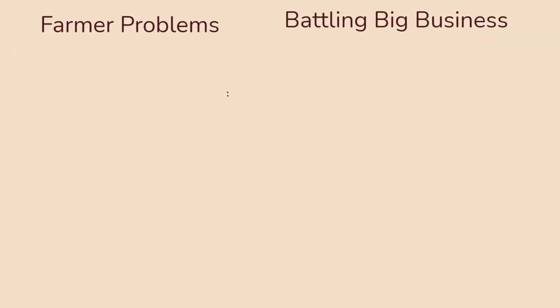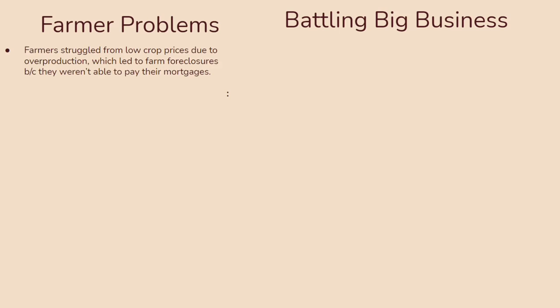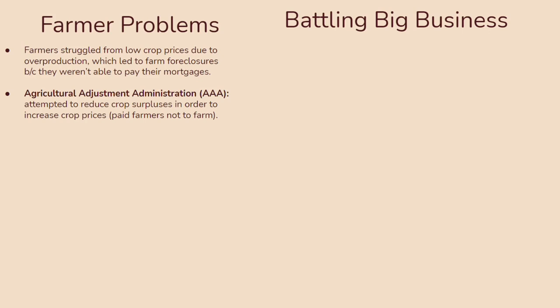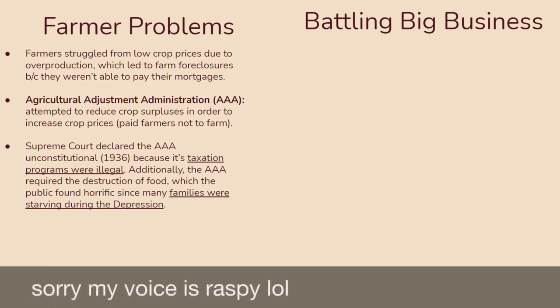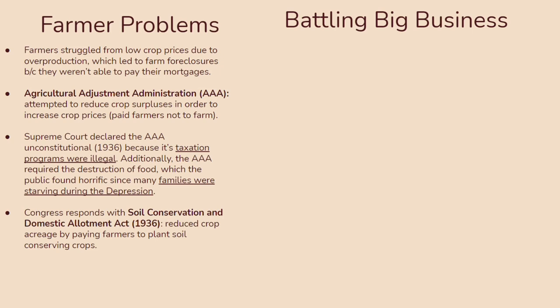Let's talk about farmer problems and battling big business. Farmers were really struggling because of low crop prices due to overproduction, which led to farm foreclosures because they couldn't pay their mortgages. This leads to the creation of the Agricultural Adjustment Administration, which attempted to reduce crop surpluses to increase crop prices by paying farmers not to farm. The Supreme Court declared it unconstitutional in 1936 because its taxation programs were illegal. Additionally, it required the destruction of food, which many found horrific since a lot of people were starving during the Great Depression. Congress then responded with the Soil Conservation and Domestic Allotment Act of 1936, which reduced crop acreage by paying farmers to plant soil-conserving crops.